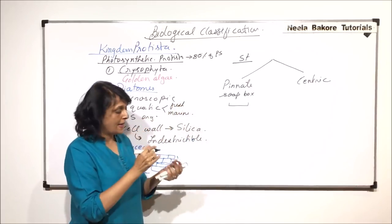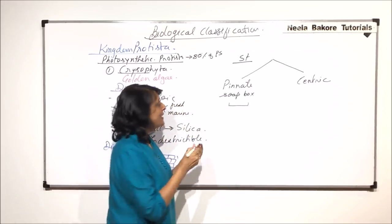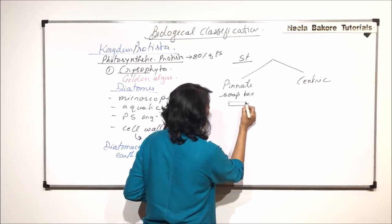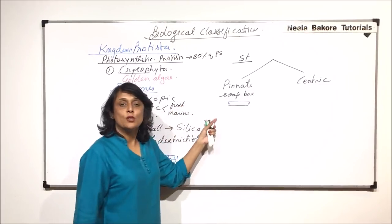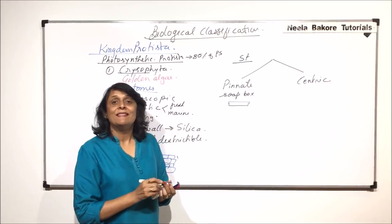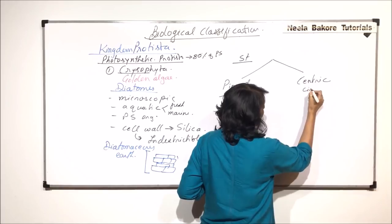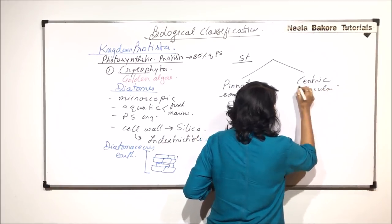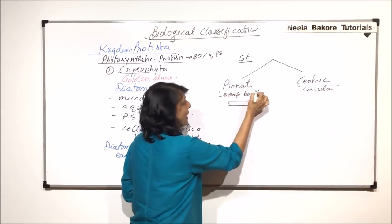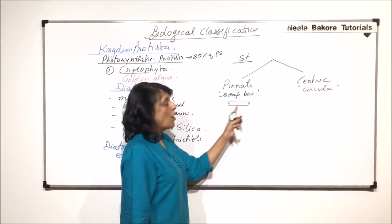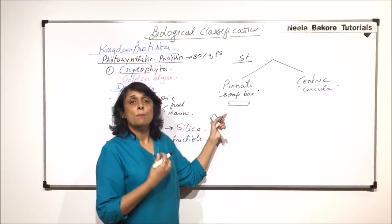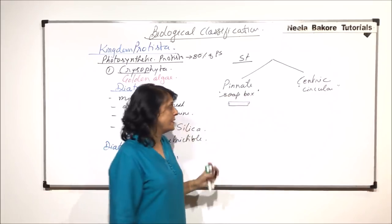The soap box has a lower part and an upper lid-like structure which fits over it. The centric type are like petri dishes, circular. On the basis of the shape, we can have pinnate type and centric type.